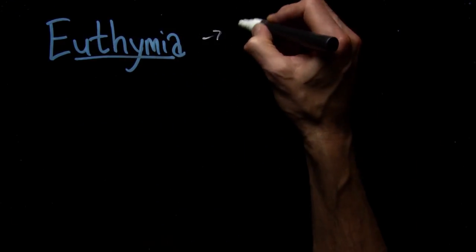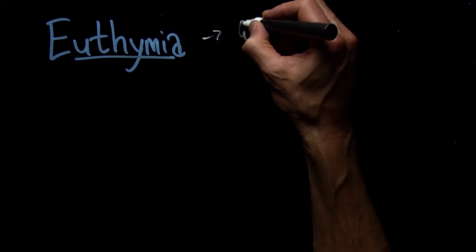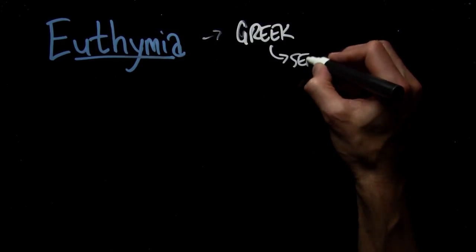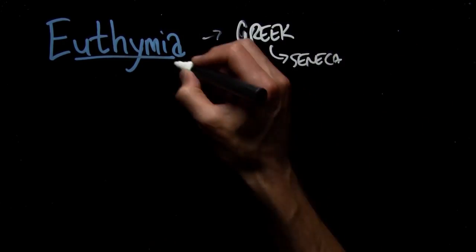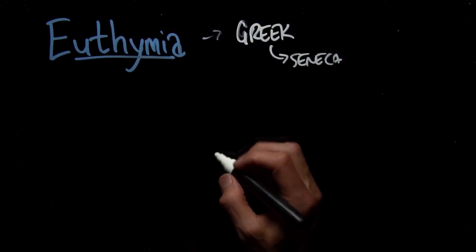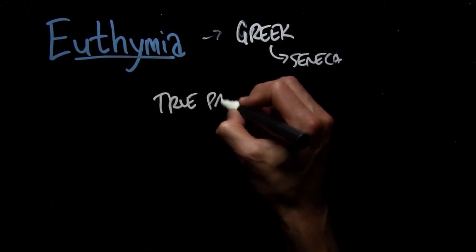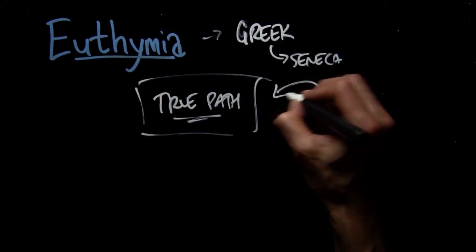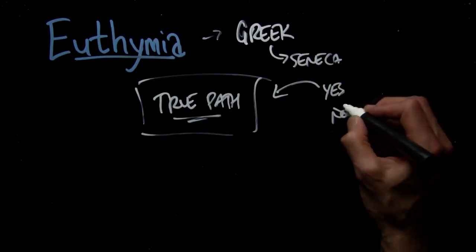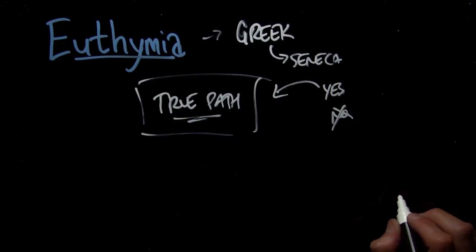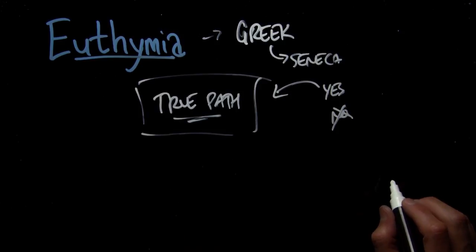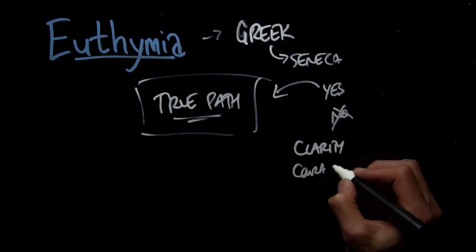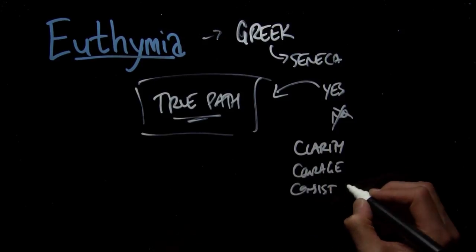Euthymia, it's a Greek word. He shares the meaning of it in the context of a story about Seneca, a Stoic philosopher, who tells us that Euthymia basically means having a sense of your true path. So what is your true path? Knowing that and saying a big yes to this allows you to say no to all the stuff that's a distraction. You can quit comparing yourself to other people because you have the clarity, the courage, and the consistency to live your true path.